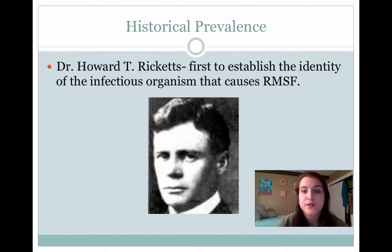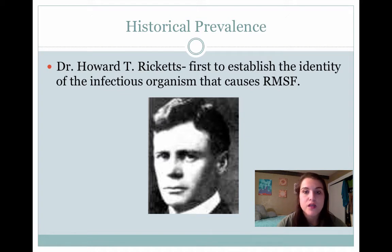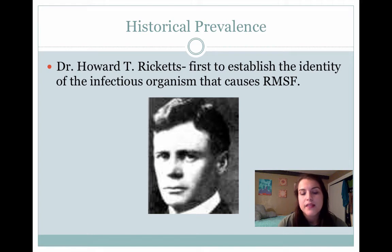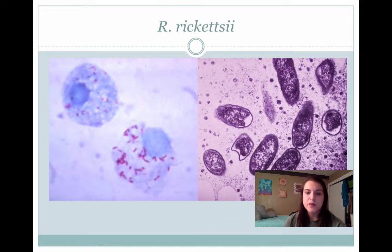Dr. Howard T. Ricketts was the first to establish the identity of the infectious organism that caused Rocky Mountain Spotted Fever. He and some of his coworkers determined that ticks were the vector of Rocky Mountain Spotted Fever, and they differentiated between cases in which they identified that Rickettsia was causing this disease. He investigated and experimented on it for decades, and that's how the bacteria was named after him — Rickettsia rickettsii. This is what it looks like.